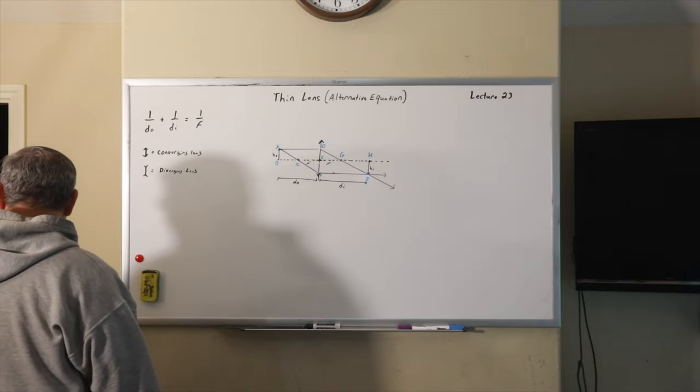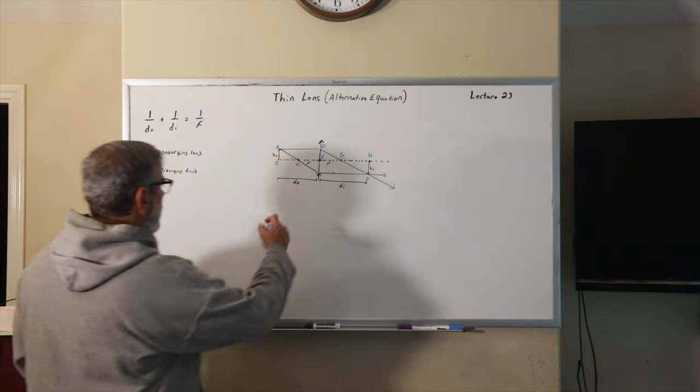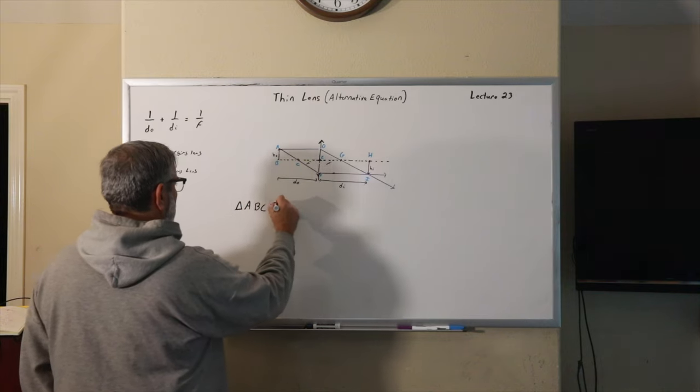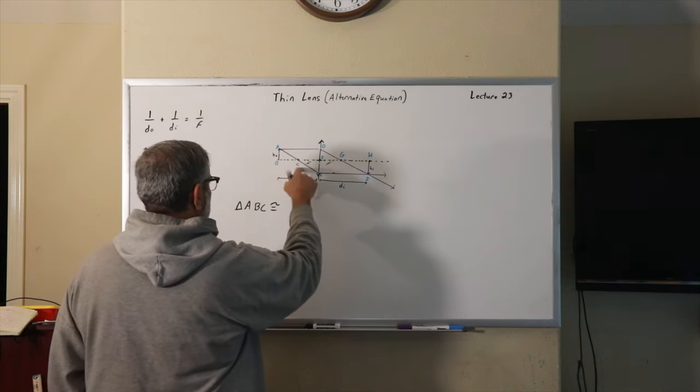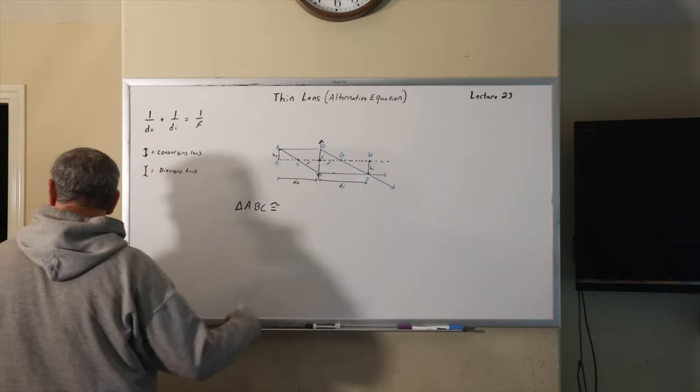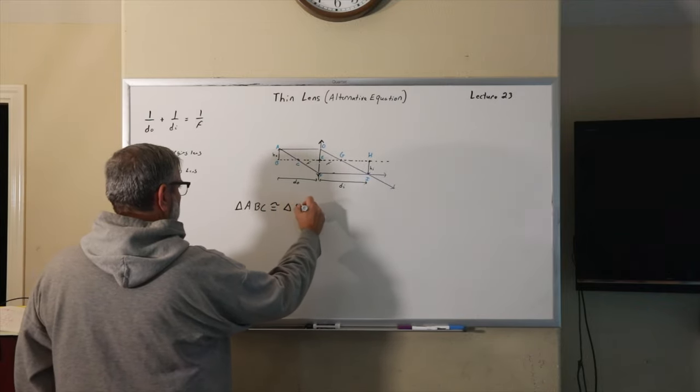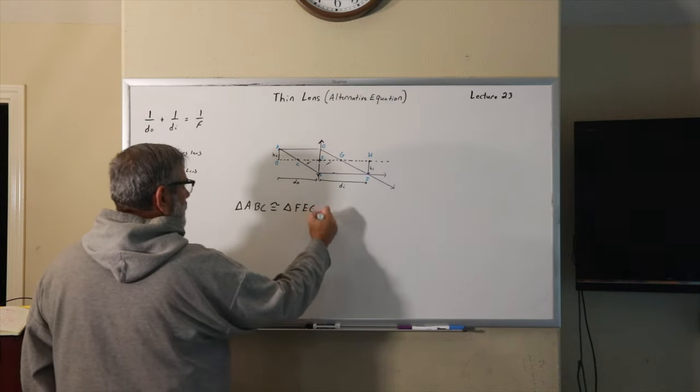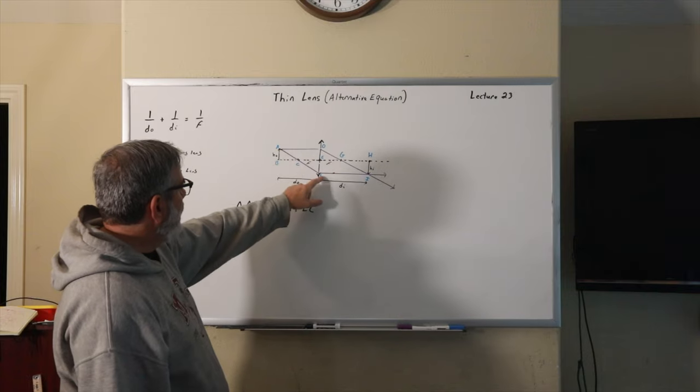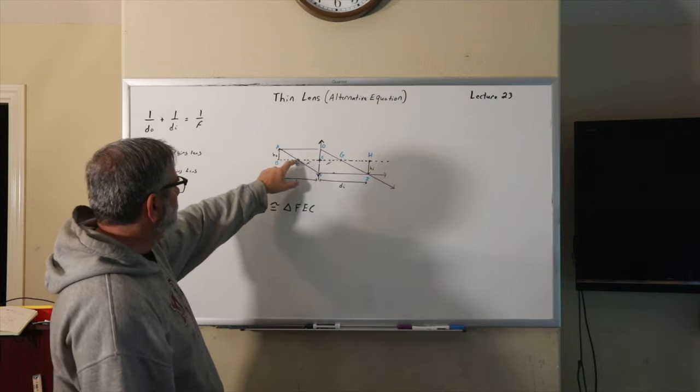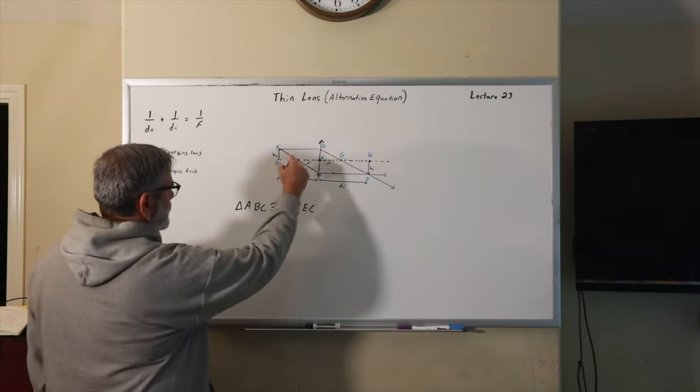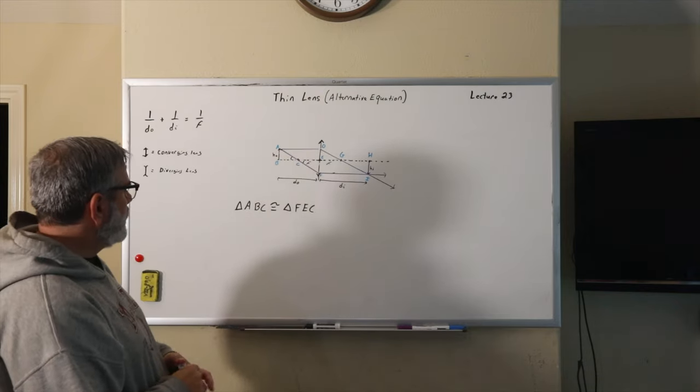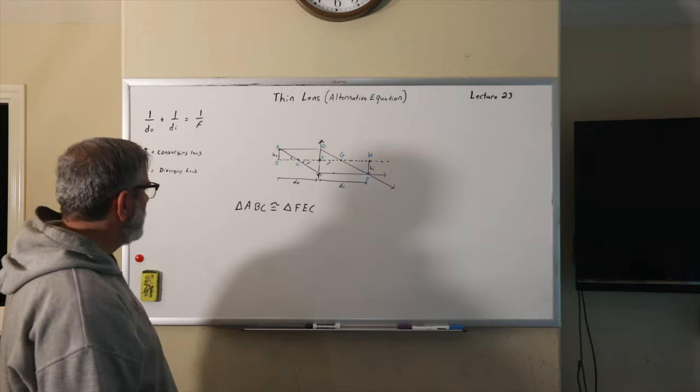But I want to point out a couple of similar triangles here. The first one is the triangle A, B, C, which you will notice is similar to triangle F, E, C. So where is F, E, C? And you can see that this angle here is opposite this angle here. And so this being a straight line makes these two triangles similar.